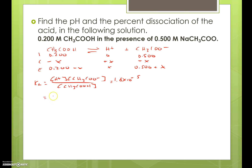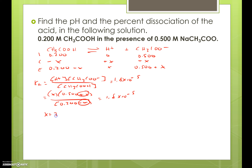We substitute in our values: x for hydrogen ion, 0.500 plus x for acetate ion, and 0.200 minus x for acetic acid, all equal to 1.8×10⁻⁵. Since we're looking at a weak acid, we assume those x's are insignificant, which makes our math a lot easier. We multiply both sides by 0.200 and divide both sides by 0.500 and solve for x. So x equals 7.2×10⁻⁶, and that gives us our new concentration of hydrogen ion.